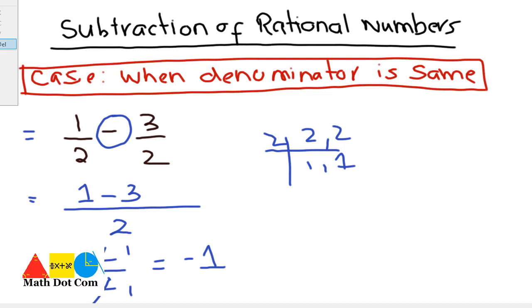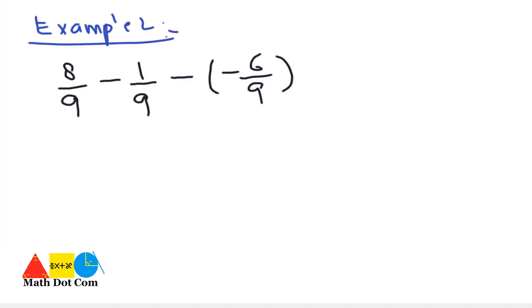Let's have one more example. In example 2 we will see how you can subtract 3 numbers. Here we have 3 numbers. Again the formula is same. Method is same. Just the numbers vary here. What you will do? You have to remove the brackets first.